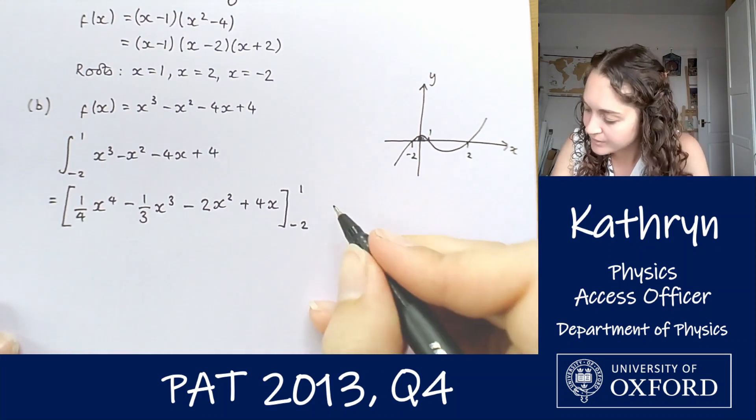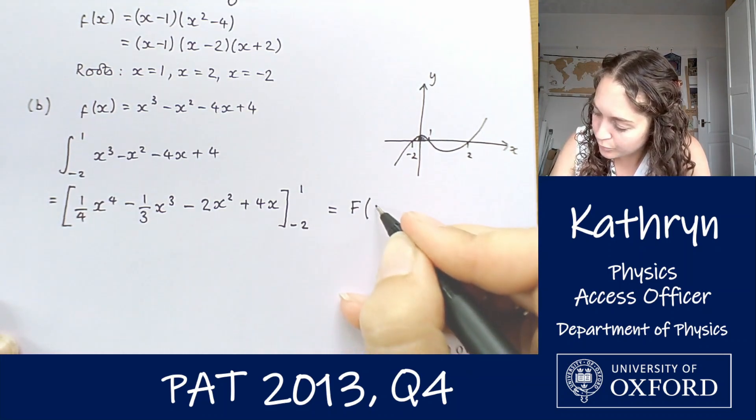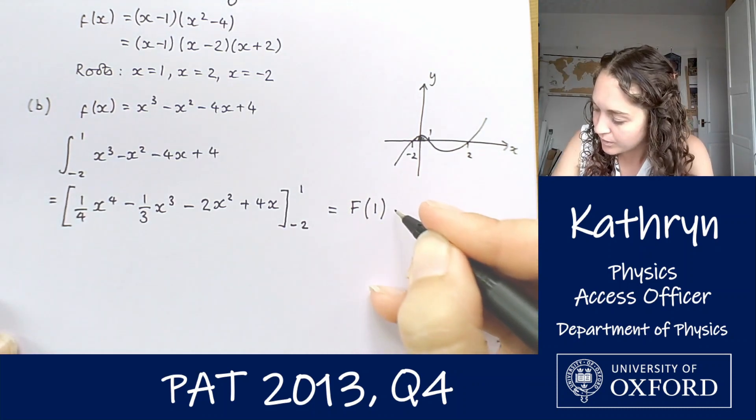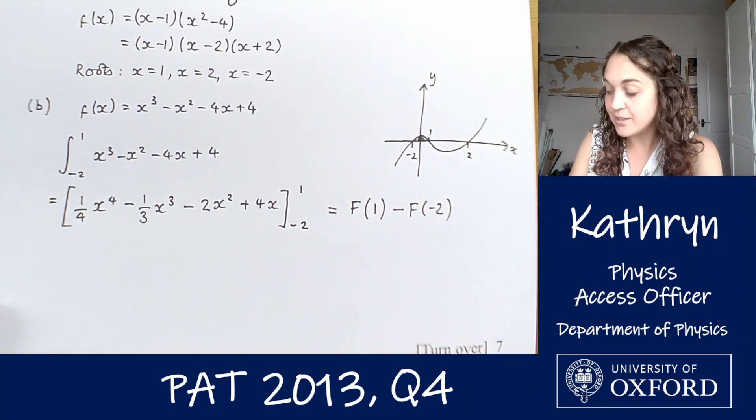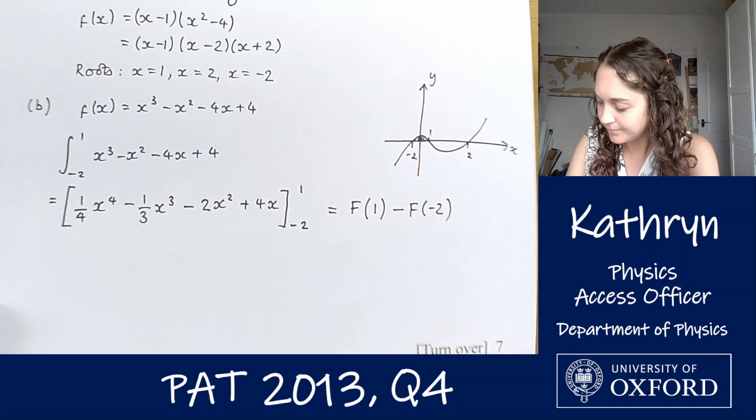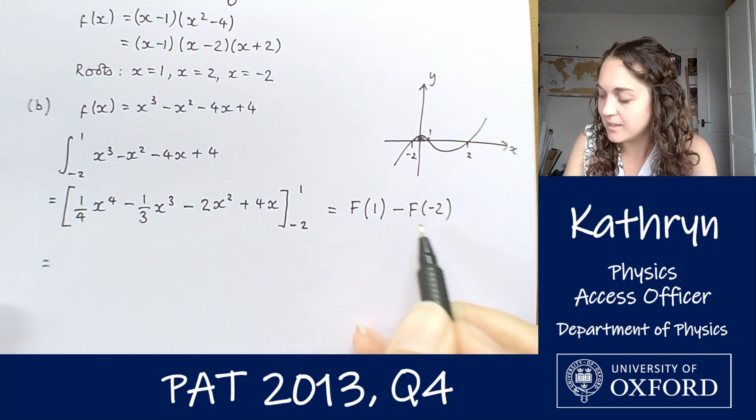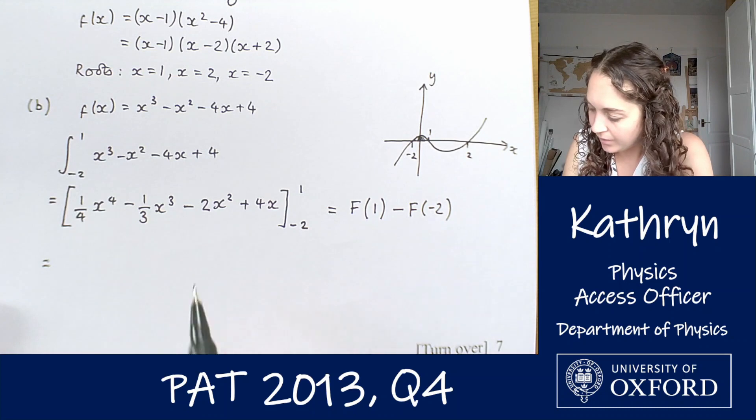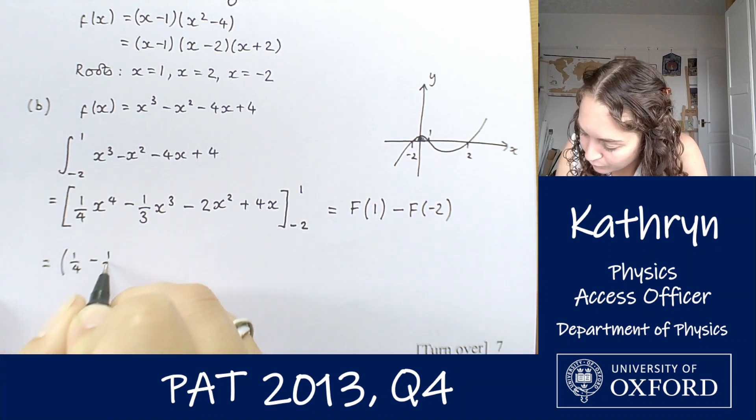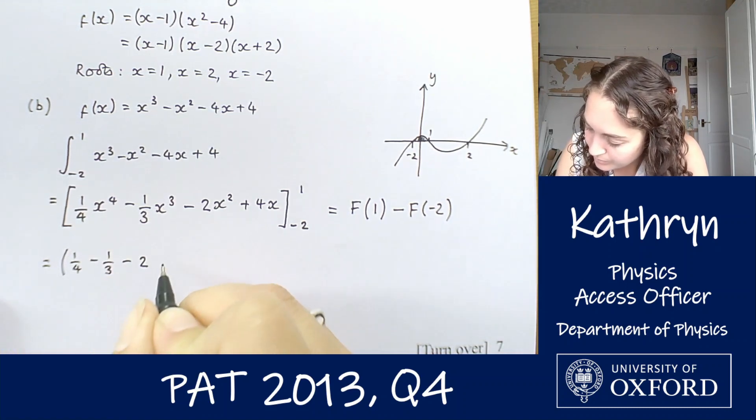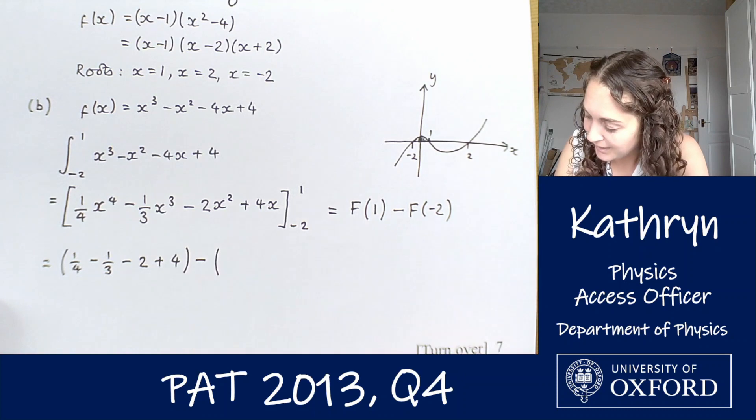If we're integrating between bounds, we want to find what that integration is. First, we find the function at 1 and we subtract the integrated function at minus 2. And that difference will give us that area. So we're going to first evaluate at 1 and then we're going to subtract the evaluated value at minus 2. So substituting 1 in for x gives us 1 quarter minus 1 third minus 2 plus 4. And then being really careful with our minus signs, we're going to have a subtraction and then evaluate it all for minus 2.